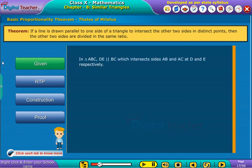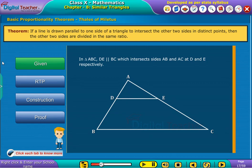Given, in triangle ABC, DE is parallel to BC, which intersects sides AB and AC at D and E respectively.